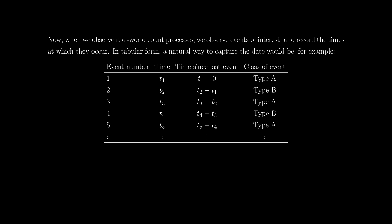In tabular form, a natural way to do this would be to have one column dedicated to the event number — events 1, 2, 3, 4, etc. — and then write down the time at which those events occur: T1, T2, T3, where those are the specific times at which you observe the events.